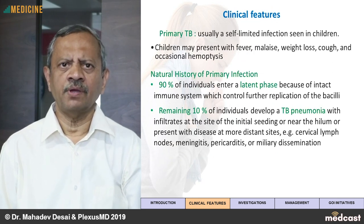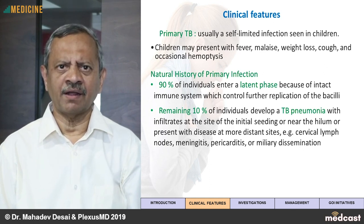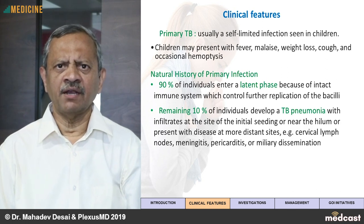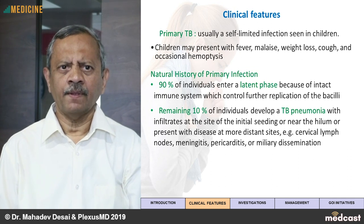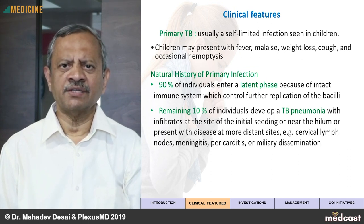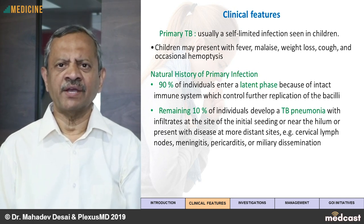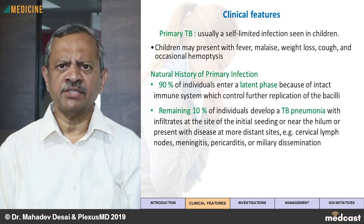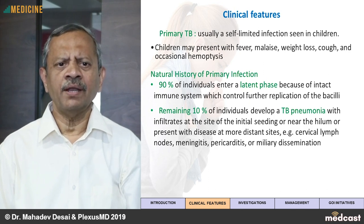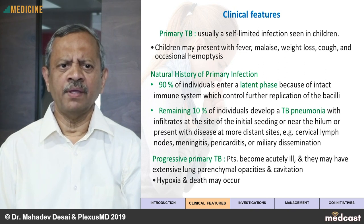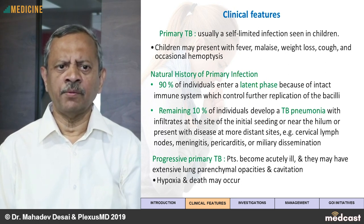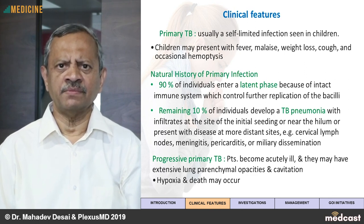The primary tuberculosis, as said earlier, is self-limited and usually seen in children. Children may present with very vague symptoms of fever, malaise, weight loss, cough and occasionally hemoptysis. A smart, proactive pediatrician can pick this up; otherwise it may be passed off as ordinary respiratory infections. The natural history of primary infection is that 90 percent of individuals go into a latent phase because of intact immunity. But 10 percent may develop tuberculosis pneumonia with infiltrates near the hilum. There may be hilar lymphadenopathy, and tuberculosis can spread to distant sites — cervical lymph nodes, meningitis, pericarditis or miliary dissemination.